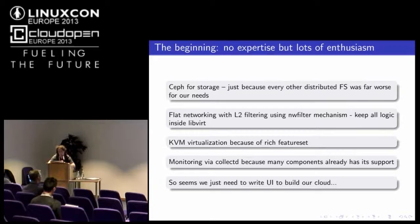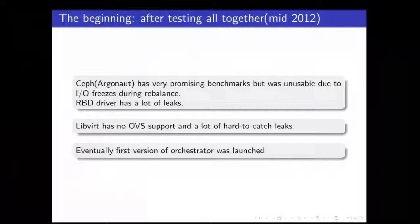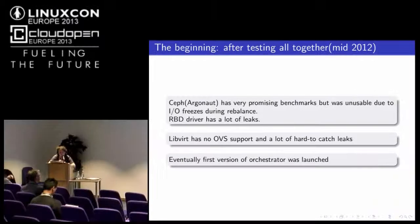For the first version we also selected CollectD because it has monitoring plugins for Ceph, for libvirt, and for many system parameters, which seemed more preferred at the time. Of course, KVM hypervisor was chosen because of fine tuning, community support, and our experience with it. We thought we just needed to write some orchestrator logic and a UI and start working — that's the OpenStack way. But why might it not work?